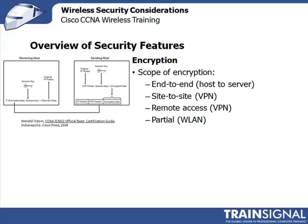Another thing to keep in mind is the scope of encryption. You can have end-to-end encryption from a host to a server — going back to application encryption with SSL, that's typically what happens. You can also have site-to-site encryption, where traffic going from one router at a branch office to a headquarters location is encrypted in transit between the sites, but the data on the local area network on both sides is not encrypted at all.